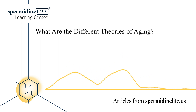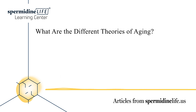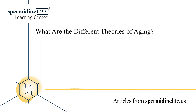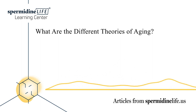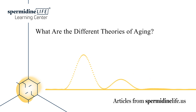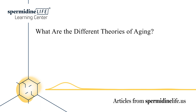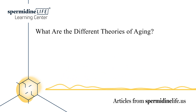Number three, epigenetic theory, also known as the information theory. This concept theorizes that your environment greatly affects how your genes and DNA express themselves. Kidney cells will express themselves as the kidney, and your liver cells will become part of the liver. This is called the epigenome. The epigenome determines what parts of the DNA should turn on and turn off to express or suppress specific genes. Over time, your environment will cause damage to this mechanism. Kidney cells may start to express themselves as liver cells, and the body goes haywire eventually.